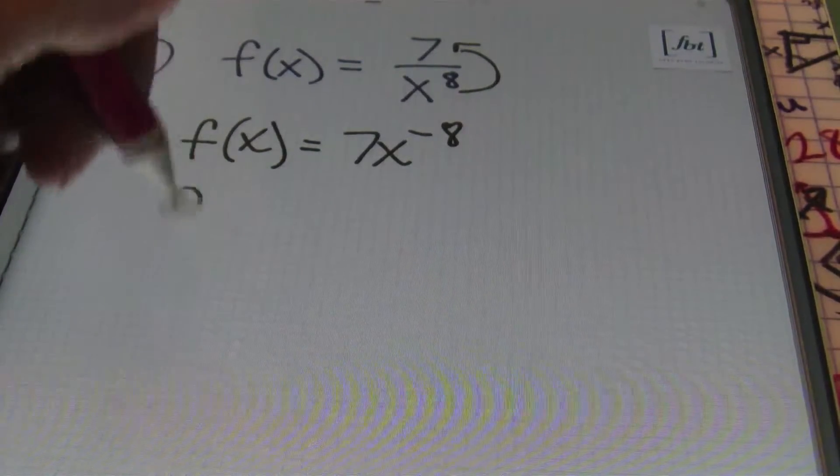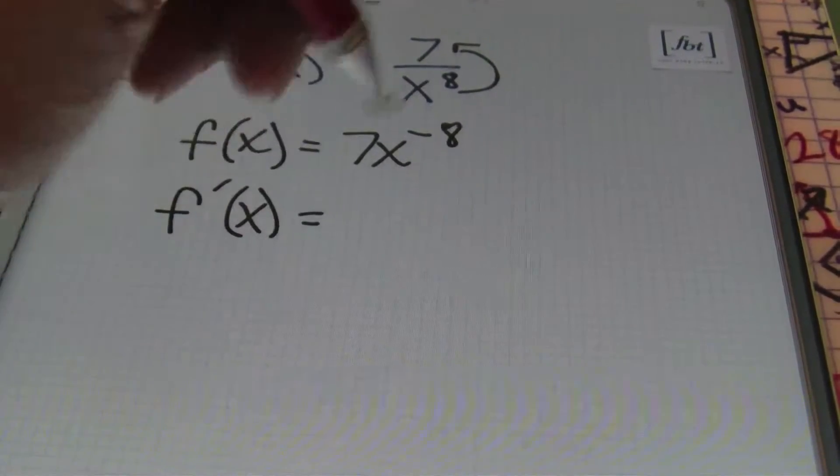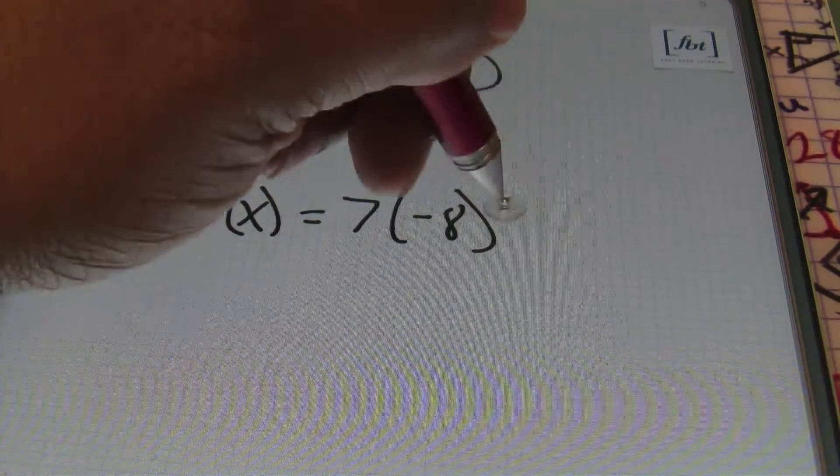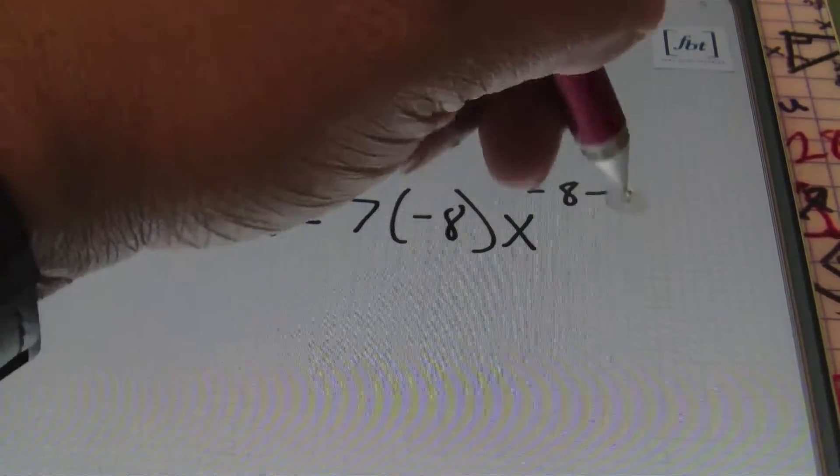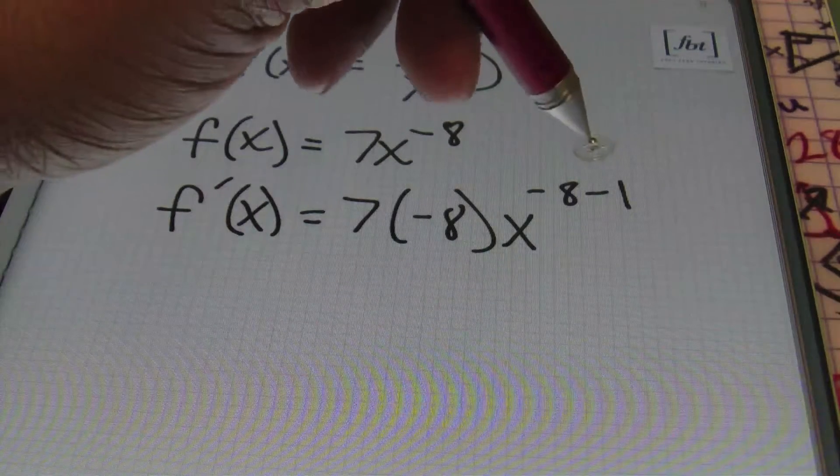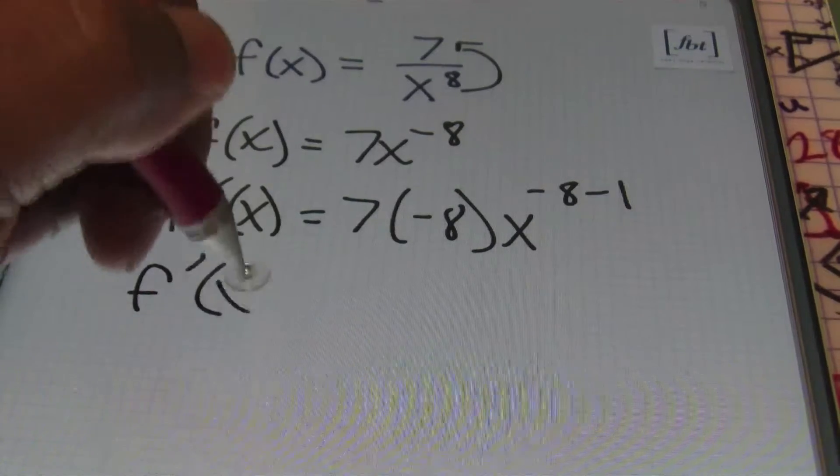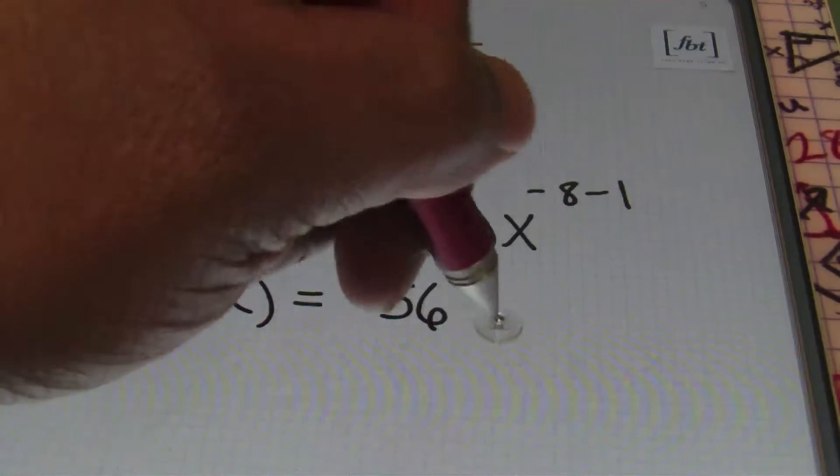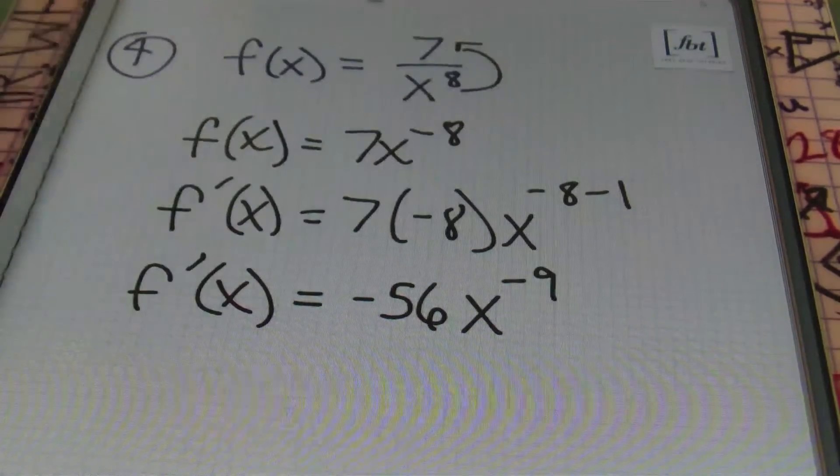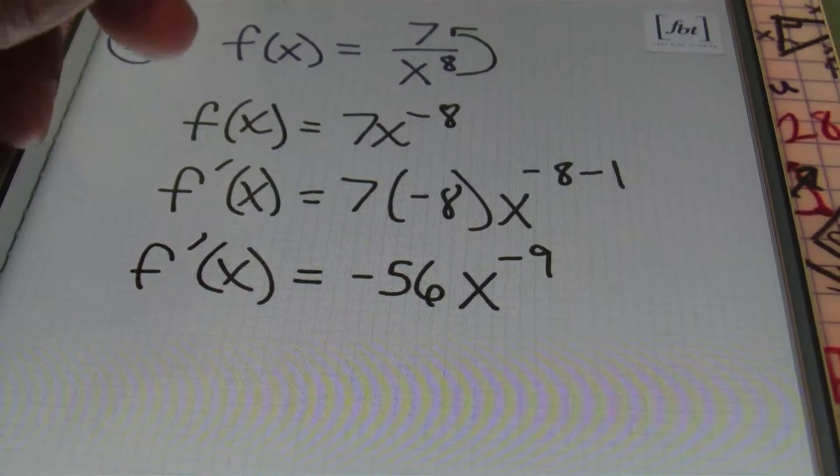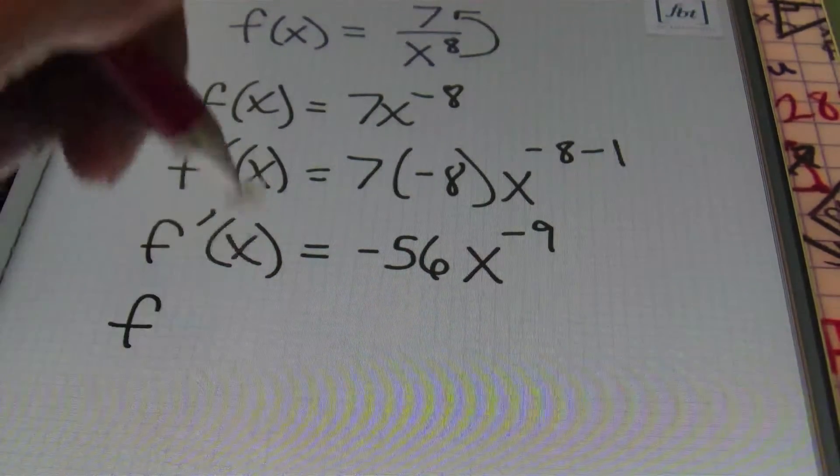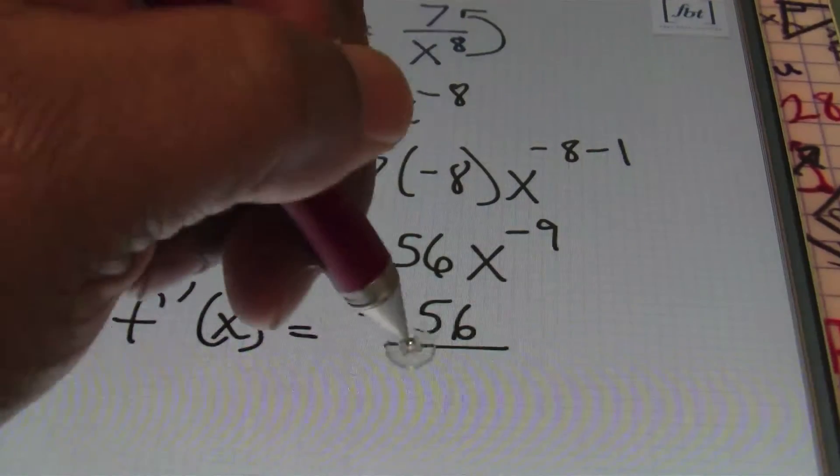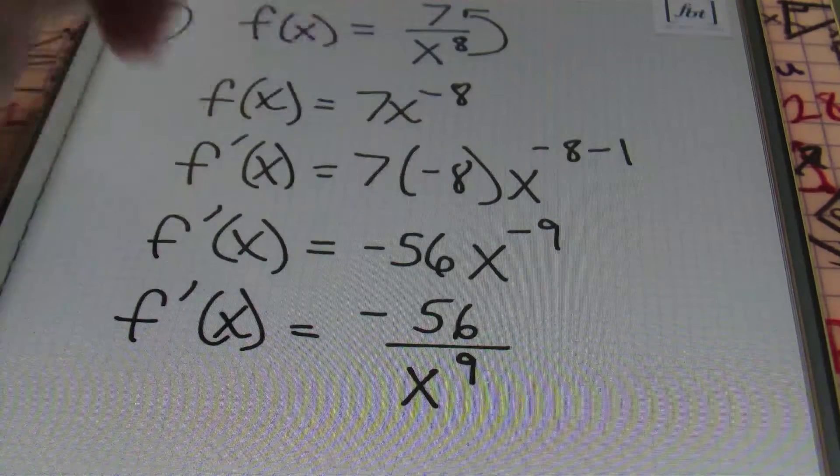Now, taking the derivative, I'll say that f prime of x will equal to that original coefficient of 7 times that exponent of negative 8 times my variable raised to the negative 8 minus 1. Remember, you're always subtracting your original exponent minus 1. Then, simplifying this further, I'll end up with 7 times negative 8 which is negative 56. And then my variable of x will be raised to the negative 9th power. I don't want to leave my answer with a negative exponent. So, what I'll do next is I'll have this f prime of x equal to negative 56 over x to the 9th power. And that's my answer.